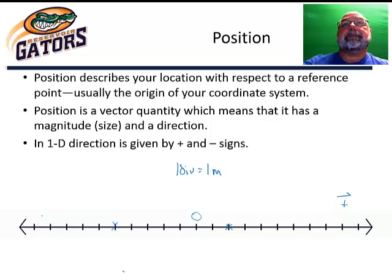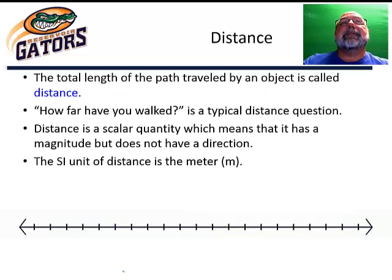Next up, distance. In this case, it's the total path length. Distance is the total path length that we travel. It usually goes along with questions like how far did you walk, how far did you drive? Unlike position, distance is a scalar quantity, which means that it only has magnitude and direction doesn't matter. Scalars are always going to have positive values. They are never going to have a negative value.